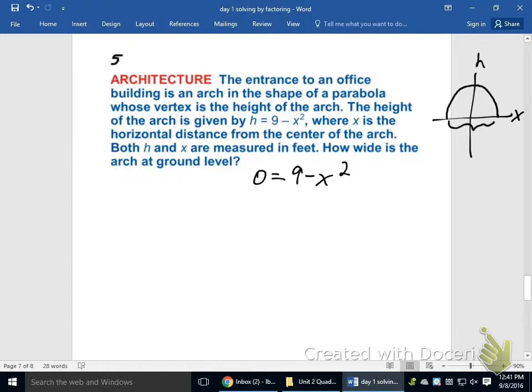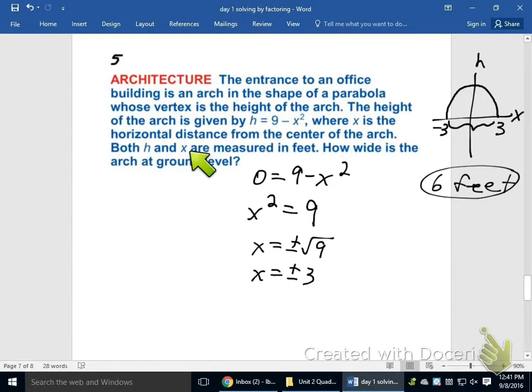And you can do this by factoring, but remember this doesn't have a bx term, so we can actually solve this by simply adding the x² to the left. Remember how I like to have that positive? x² = 9. And now instead of factoring, I'll just actually take the plus or minus root, because there was no bx term. It's when there's a bx term that you can't do that. So x = ±√9. So my two answers are positive or negative 3. And I would say this is -3, this is positive 3. Now, how wide is the door at ground level? And the answer would be 6 feet, because this thing did say x was measured in feet.